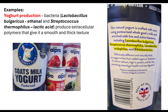Yoghurt production is a prime example of bacteria — a microorganism added to change the texture and consistency of the proteins inside the yoghurt. As you can see on a goat's milk yoghurt label, there are five active bacteria, and these produce extracellular polymers which are released via exocytosis, affecting the texture and taste of the yoghurt.